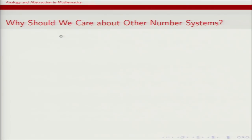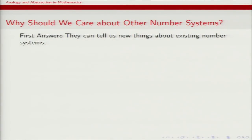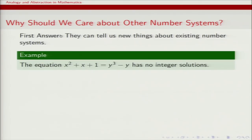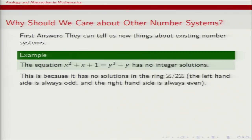Anytime someone introduces an abstraction, a legitimate question is: what purpose does this serve? Why should you care about other number systems? One answer is that by thinking about other number systems you can learn new things about the integers. For example, here's an equation with no integer solutions. How do you know? You can observe that the left-hand side is always odd and the right-hand side always even — they can never be equal. Another way to phrase this: the equation has no solutions in Z mod 2, where you only need to check two values for x and two for y.